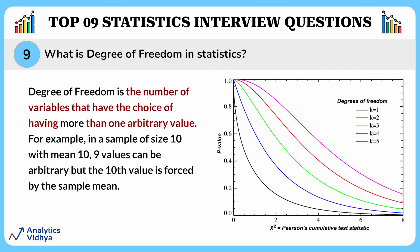The final question is about what degree of freedom is in statistics. Degree of freedom is the number of variables that have the choice of having more than one arbitrary value — in other words, the number of independent variables that can be estimated in a statistical analysis, telling you how many items can be randomly selected before a constraint must be put in place. It's like the wiggle room or flexibility in your data. For example, in a sample of size 10 with mean 10, nine values can be arbitrary but the tenth value is forced by the sample mean. If you have five numbers and want to find the mean, you can choose any four values freely — the fifth is determined by the mean of the other four, so you have four degrees of freedom.